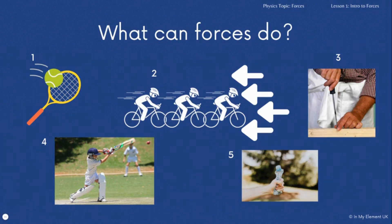The third one shows a screwdriver and a nail — a force will make something turn. The force acting on that screwdriver into the screw will make the screw turn. Then, number four, the cricket player — when they hit that ball, the ball will change direction. It comes from one direction and they hit it to change it to move in another direction.